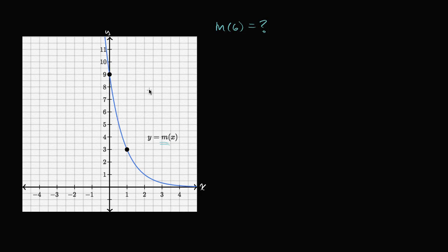As I mentioned, this is an exponential function. So m is going to take the form m of x is going to take the form a times r to the x-th power, where a is our initial value and r is our common ratio.